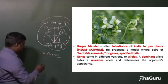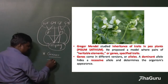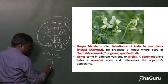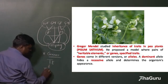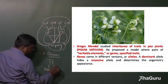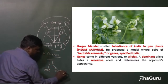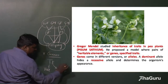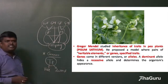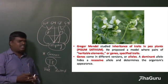Genes are the factors responsible for characteristics, and they can be expressed in different versions called alleles. For example, capital T and small t — capital T refers to tall, and small t refers to dwarf or short characteristics. This is called an allele. Genes can always be expressed in alleles.